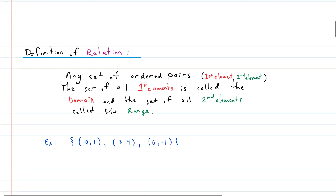So what is a relation? A relation is one of the loosest, least restrictive constructs that we have. All that is important is that you have two items — an ordered pair — meaning it's important which is the first element and which is the second. The first goes on the left, the second on the right, and they can't switch places. The set of all first elements is called the domain, and the set of all second elements is called the range.